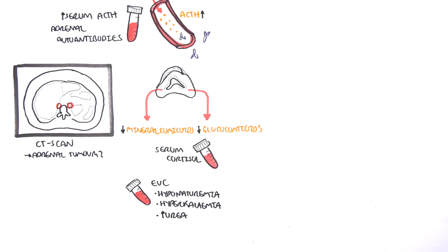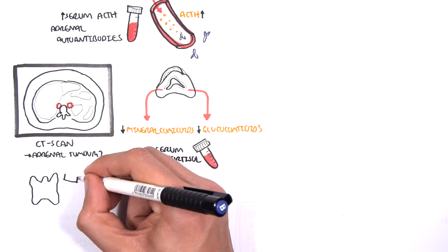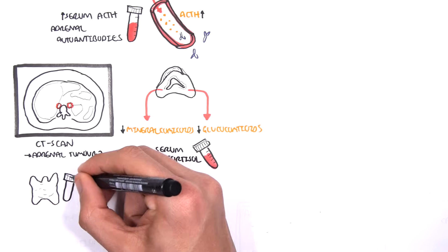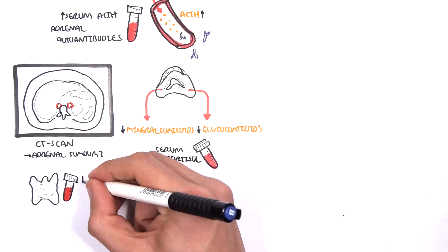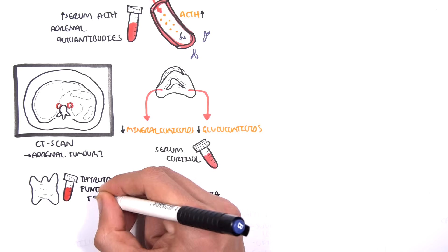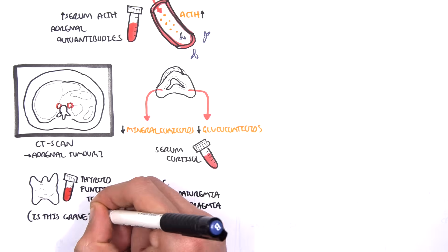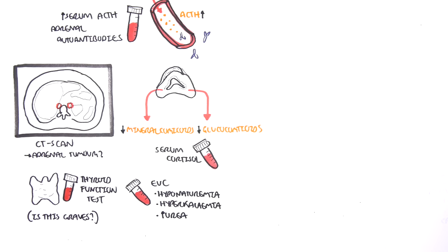A thyroid function test is also important, as one of the main differentials for Addison's disease is Graves' disease.